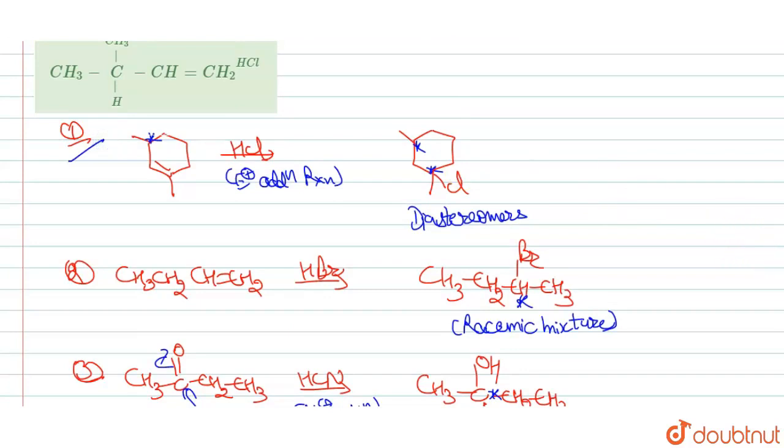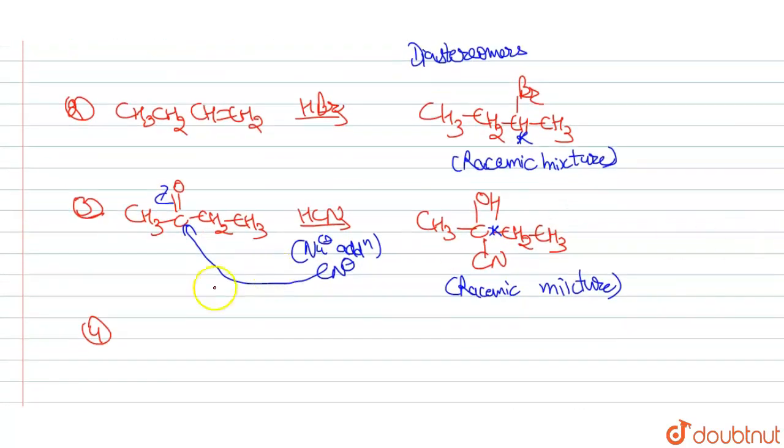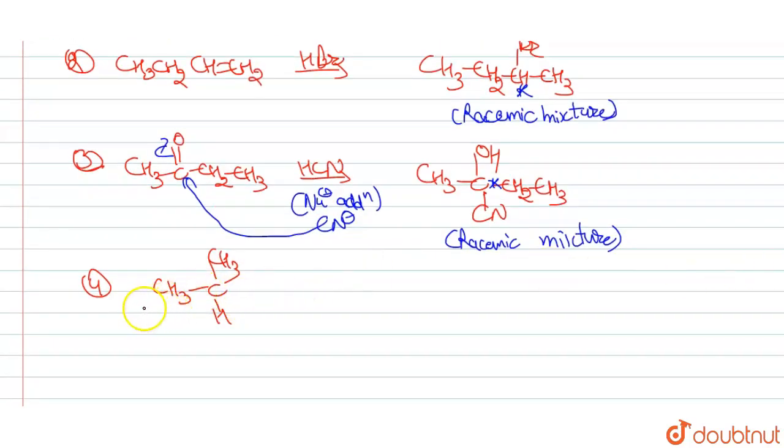Now option one, now we will discuss option four also. Option four is also remaining. Now what it is saying is option four is CH3C, CH3H, CH3C, CH3H and here CH=CH2. CH, CH3CH, CH3 and CH=CH2. Now we are reacting with reagent HCl. HCl is reagent.